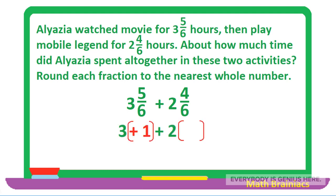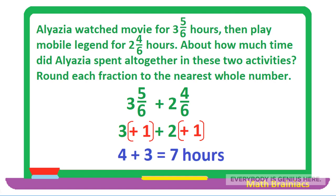Since the numerator 5 is as large as the denominator 6, we round 5 over 6 up to 1. In the second fraction, the numerator 4 is more than half of the denominator 6, so we also round 4 over 6 up to 1. Accordingly, 3 plus 1 gives us 4, and 2 plus 1 gives us 3. Therefore, 4 plus 3 gives us 7 — Aliasya spent about 7 hours in the two activities.